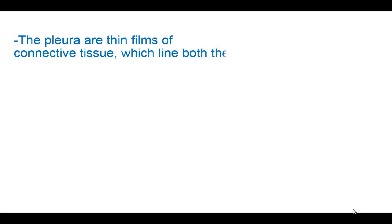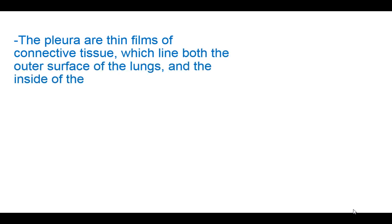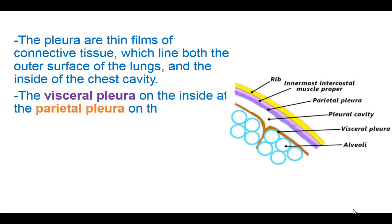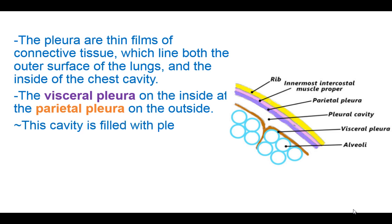The pleura are thin films of connective tissue which lie on both the outer surface of the lungs and the inside of the chest cavity. The visceral pleura lines the inside and the parietal pleura lines the outside. This cavity is filled with a fluid known as pleural fluid that acts as a lubricant.